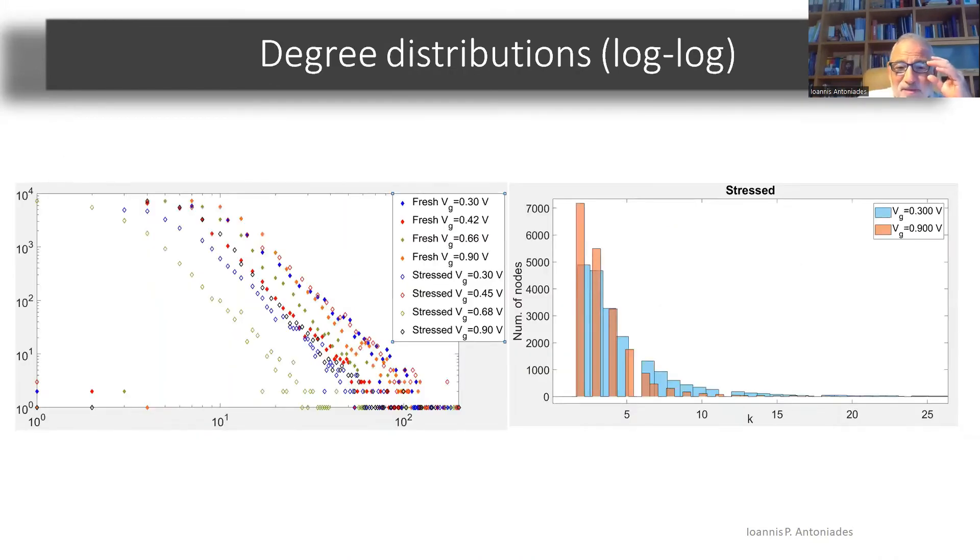If you look at the degree distributions now, you see that they have power-law behavior in all the time series, both fresh and stressed, so they are fractal time series.